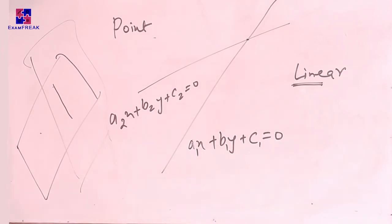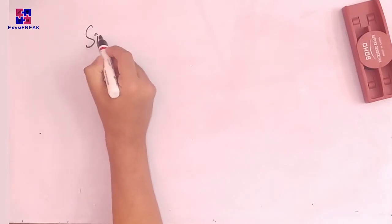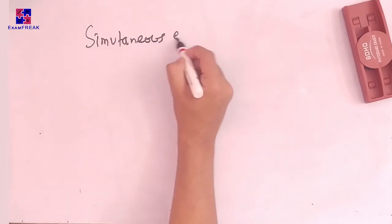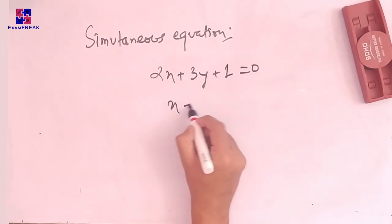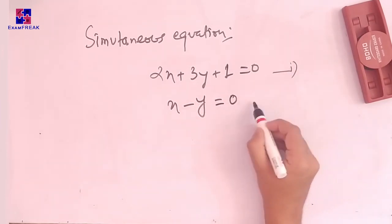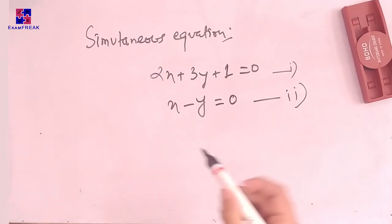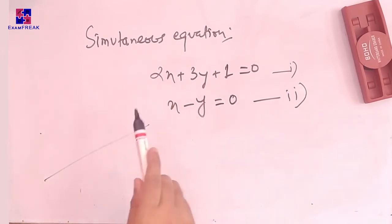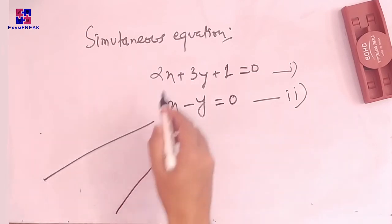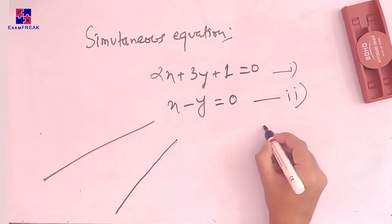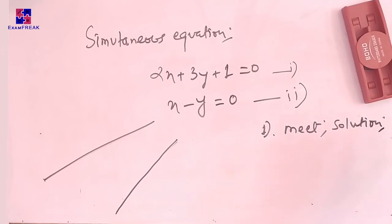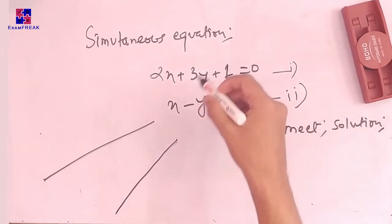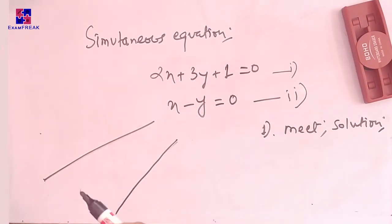Now let us come to the topic of simultaneous equations. Consider two equations: 2x + 3y + 1 = 0 and x − y = 0. These are two linear equations, so each must represent a straight line. If one line is represented by the first equation and another by the second, it is possible that they meet. If they meet, there is a solution — a point of intersection. We eliminate one variable and find the answer, because that point will satisfy both equations simultaneously.